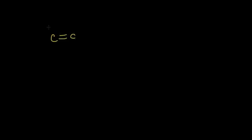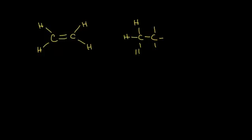Let's take a look at the simplest alkene — two carbons that are double bonded to each other, with hydrogens placed around each carbon. Let's compare that to a two-carbon alkane, which has six hydrogens around it. When we did our alkane nomenclature, we called a two-carbon alkane ethane, with the A-N-E ending for an alkane.